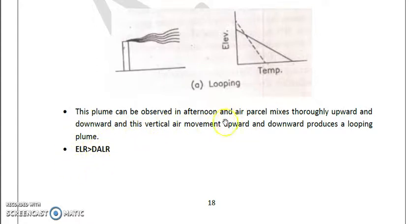Generally looping plume is observed in unstable condition where ELR is more than DLR. This plume can be observed in afternoon because noon or afternoon the atmosphere is unstable.